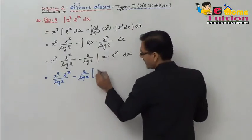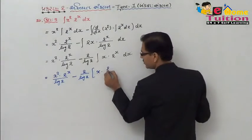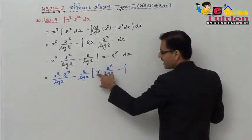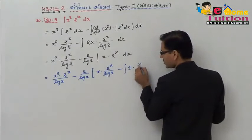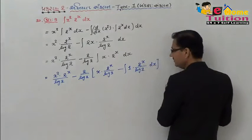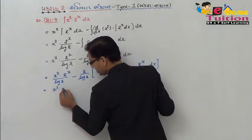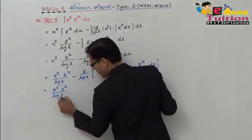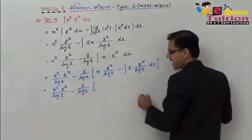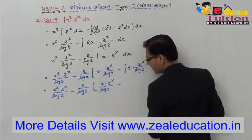2 raise to x upon log 2 minus. minus x minus x · 2 raise to x, x · 2 raise to x. upon log 2. minus 2 upon log 2. x. 2 raise to x. upon log 2. minus.